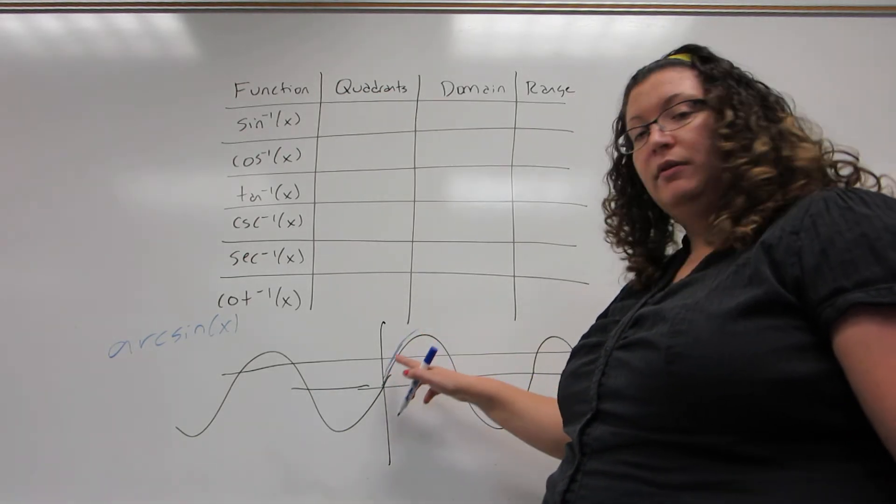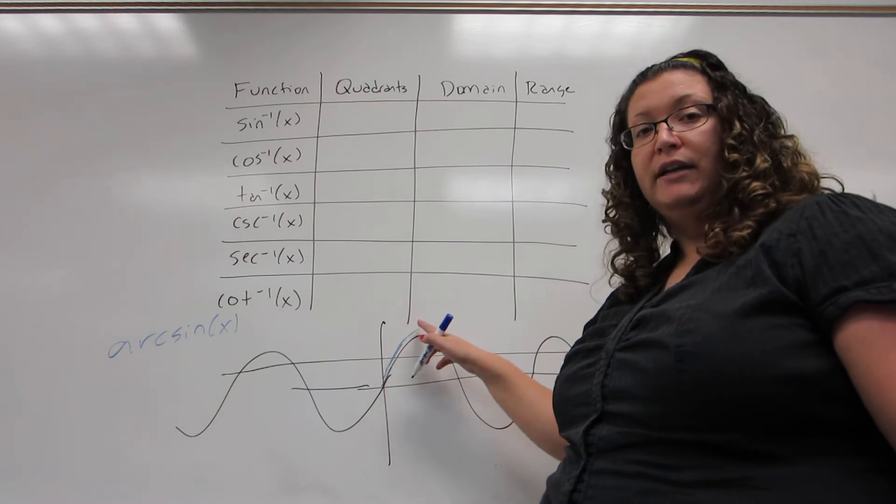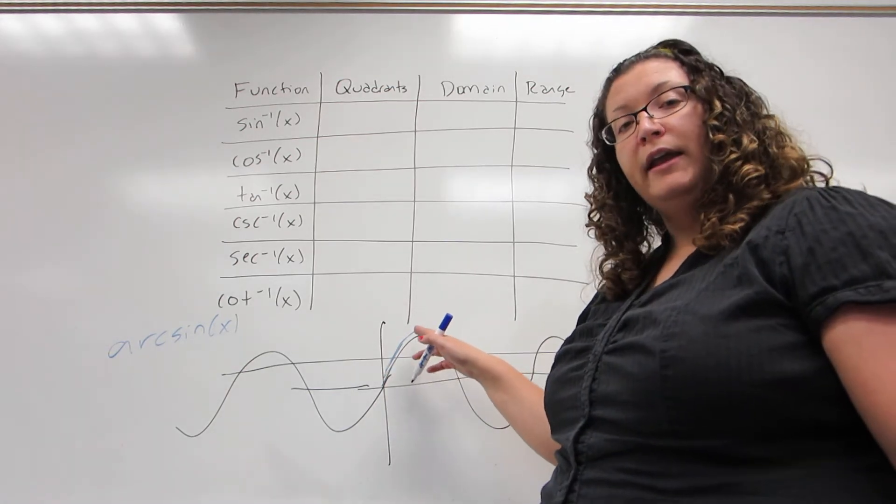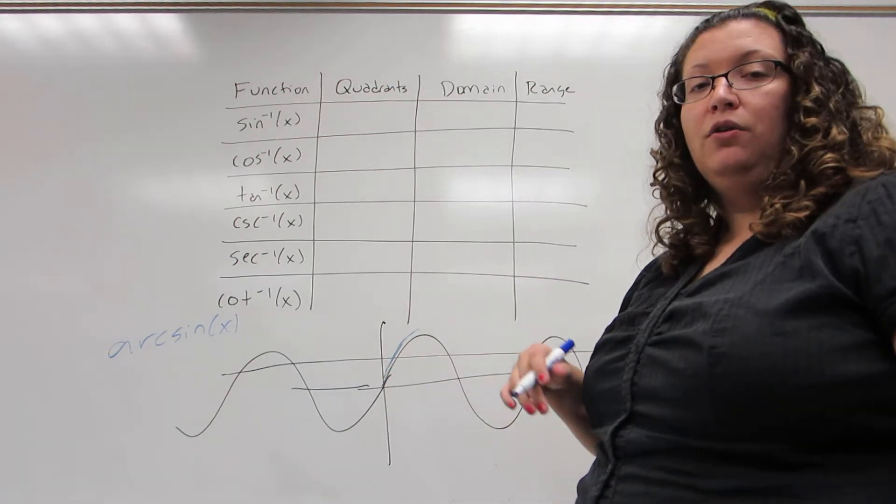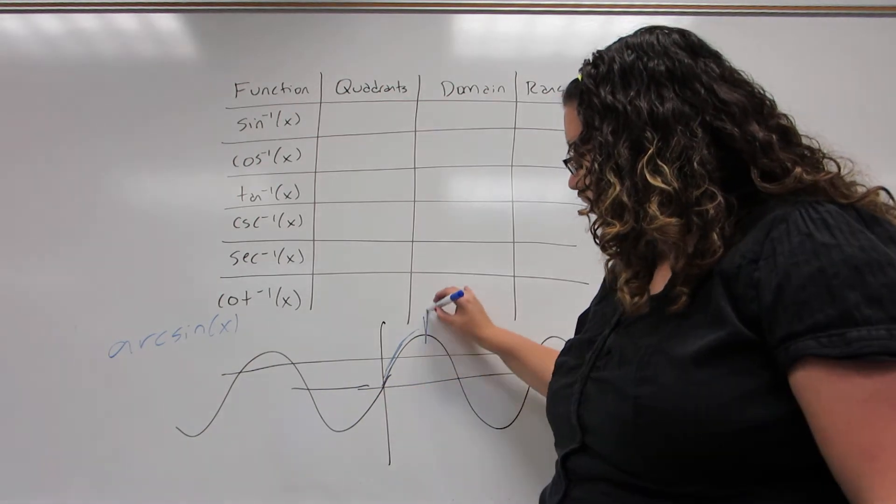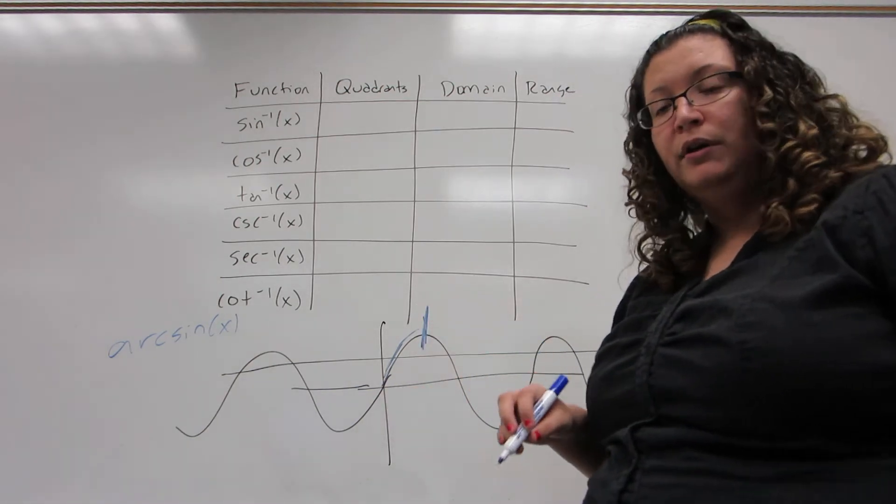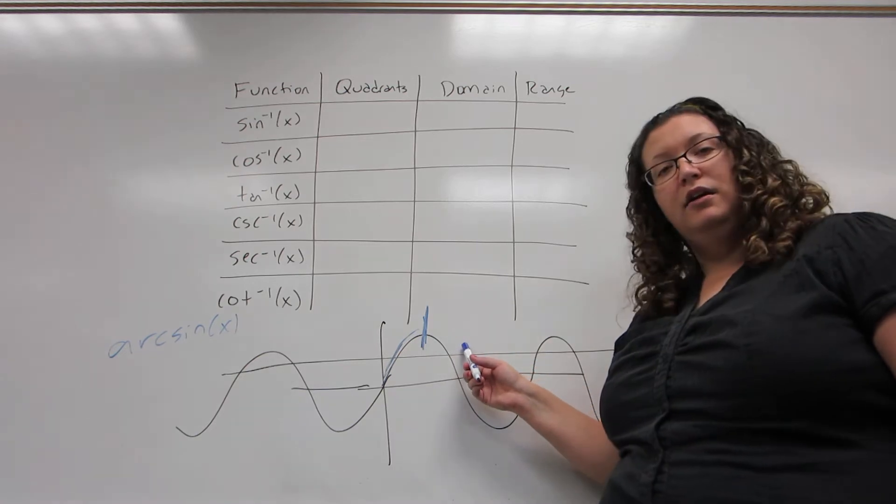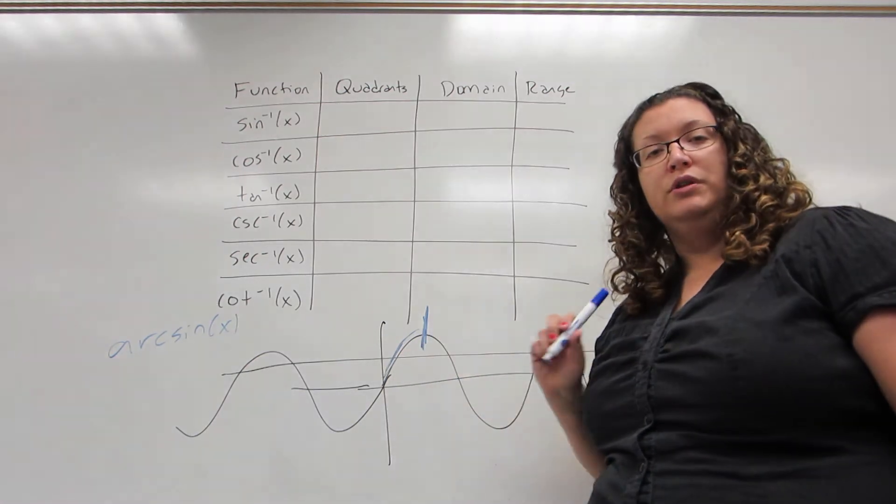And we're going to start at the origin and go right as far as we can without it failing a horizontal line test. So for the sine graph, I have to stop at the top of this hump because if I continue past that hump, all of a sudden it will start failing a horizontal line test.